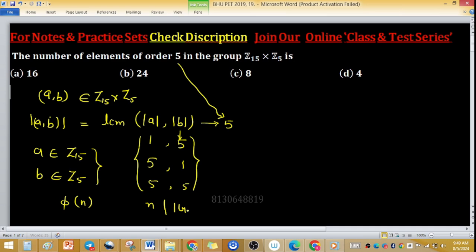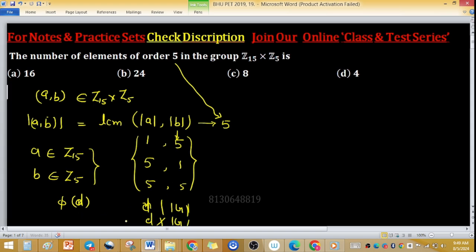If d doesn't divide the order of the group, then it's 0. Using this concept, the number of elements of order 5 in Z₅ will be φ(5), which equals 4.